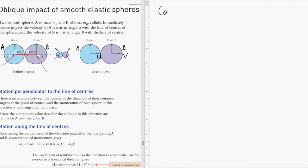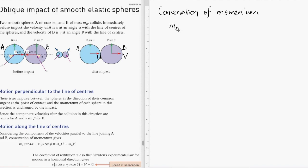We apply conservation of momentum, assuming there is no external force acting on this system. Based on conservation of momentum, we set up an equation relating all velocities of objects A and B before and after collision. The total momentum before collision must equal the total momentum after collision.